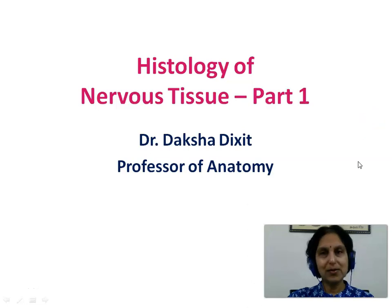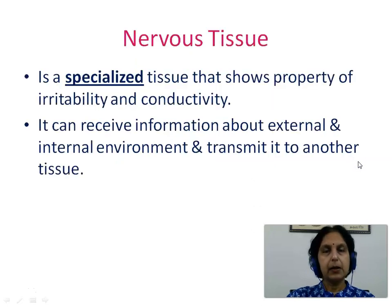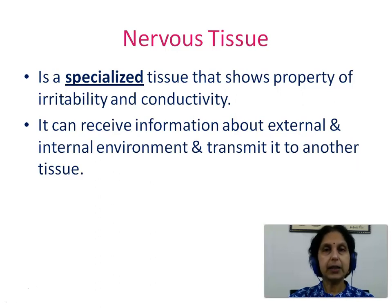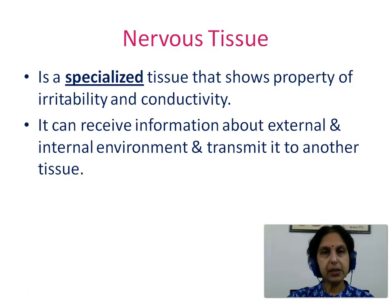Hello students. Today we will be studying the histology of nervous tissue part 1. Nervous tissue is a specialized tissue that shows property of irritability and conductance. It can receive information about the external and internal environment and transmit it to another tissue.